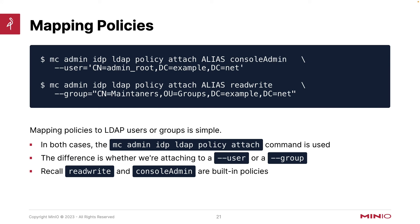Once we have this, we now need to map the policy using MC admin IDP LDAP policy attach — we can also do detach. I can attach console admin to a particular user — that's probably not a bad idea, limiting it to a particular user instead of a group. And then I'm going to take read-write and give that to a different group of maintainers, for instance. Read-write and console admin are built-in policies, but again we can attach to a particular user or a particular group. One little difference to note: it's dash-dash user equals, not dash-dash user space, as it was when attaching policies using the MinIO IDP.